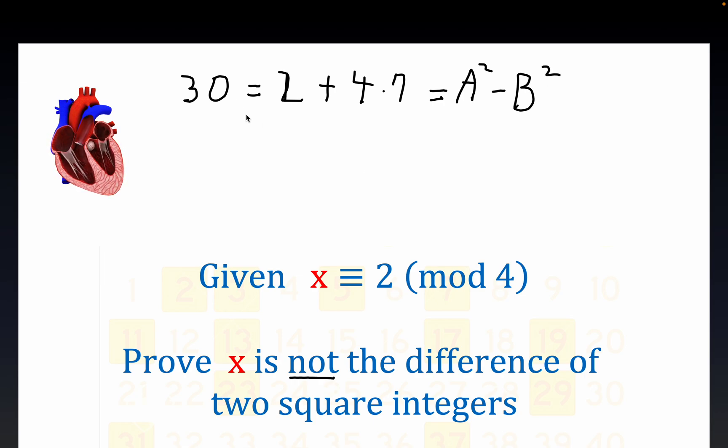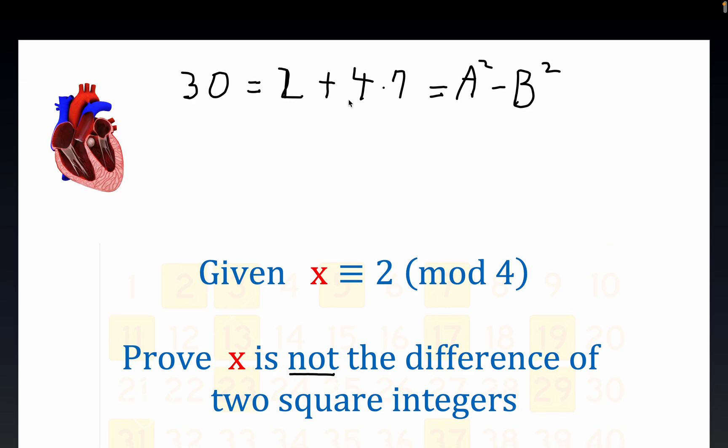You see, we're assuming that this number that we're starting with here, 30, is congruent to 2 modulo 4. And this is another way of writing it. We want to show that it's not the difference of two square integers. So we should get some kind of contradiction if this happens to be true. So let's go a little bit further right here.